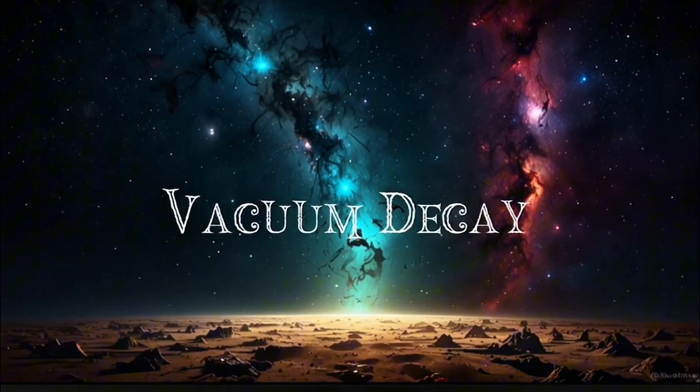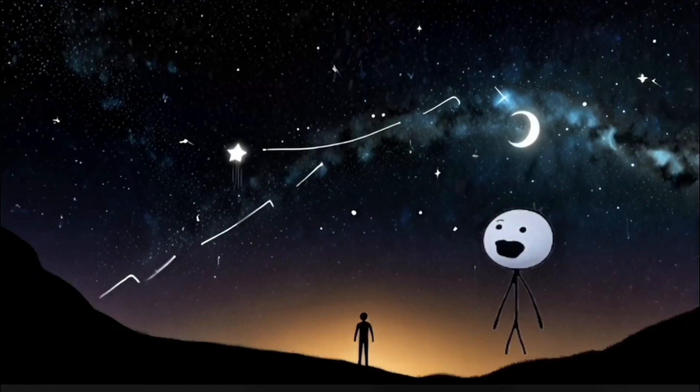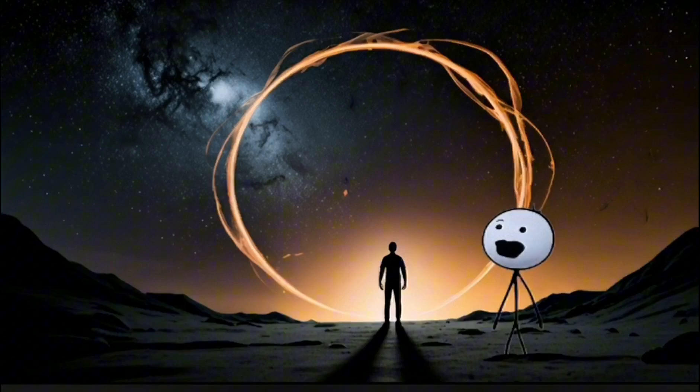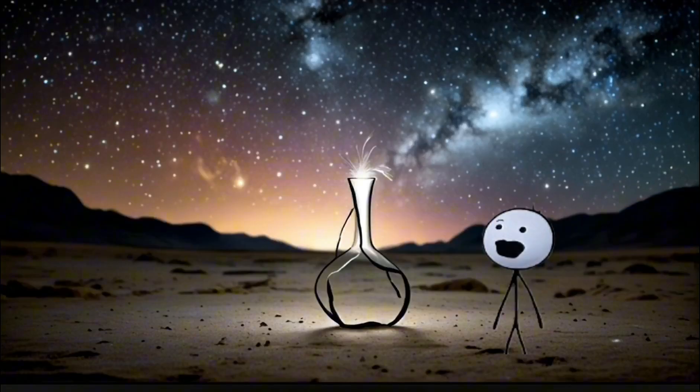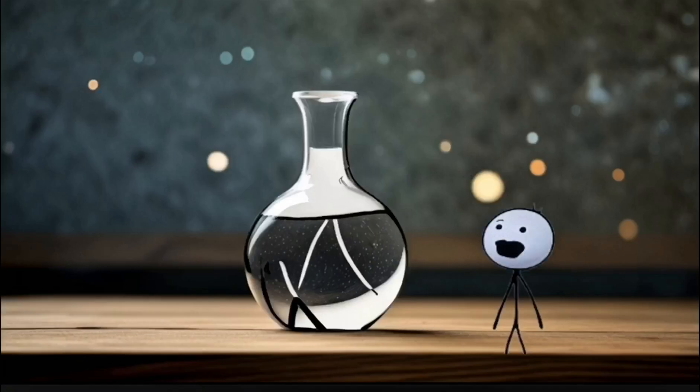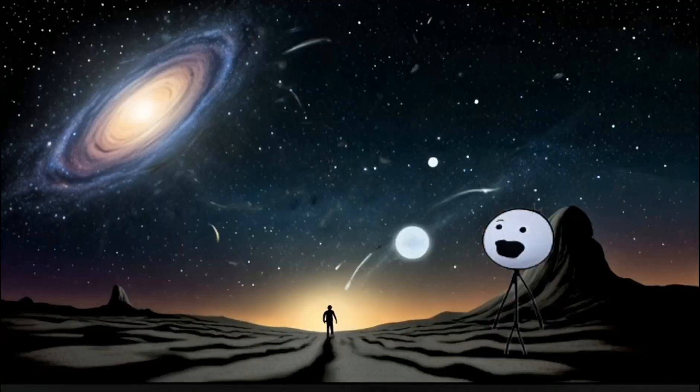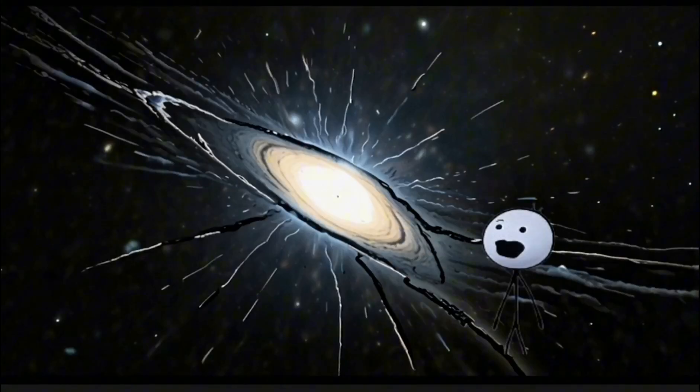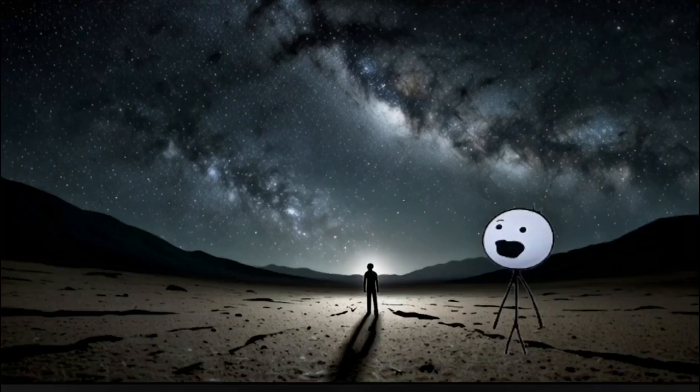Number 2: Vacuum decay. This one's theoretical, but also the most existentially horrifying. What if the universe isn't in its most stable form? What if it's just temporarily holding together, like a glass vase balanced on the edge of a table? This idea is called vacuum decay. And it means that at any moment a tiny bubble of true vacuum could randomly appear, destroying everything it touches at the speed of light. No warning. No sound. No pain.